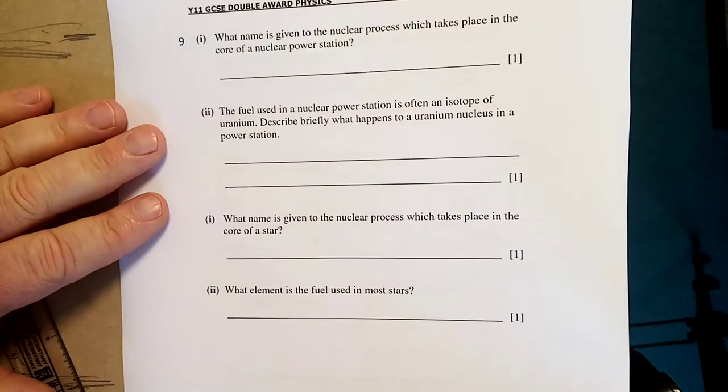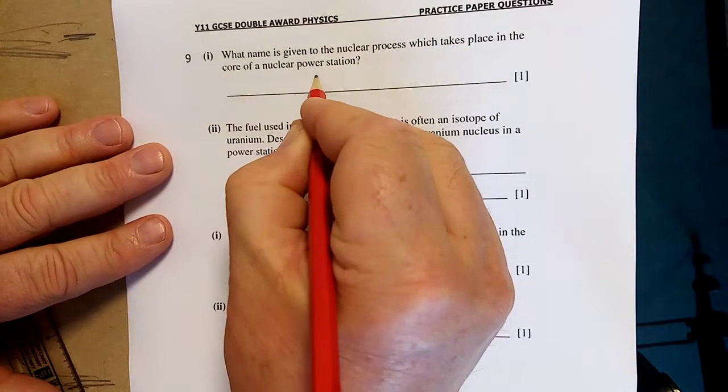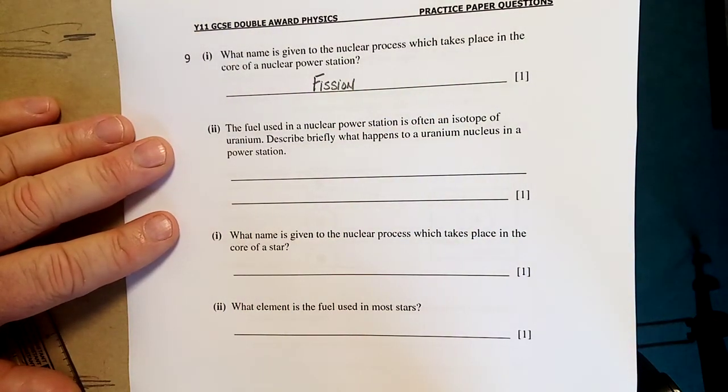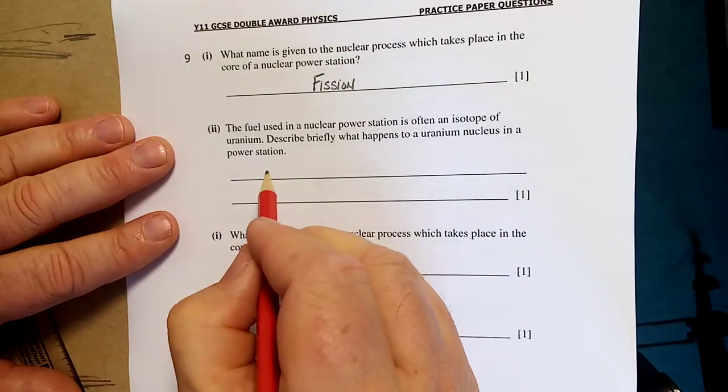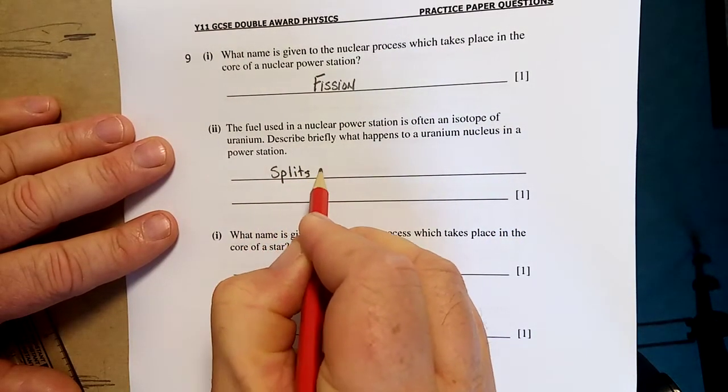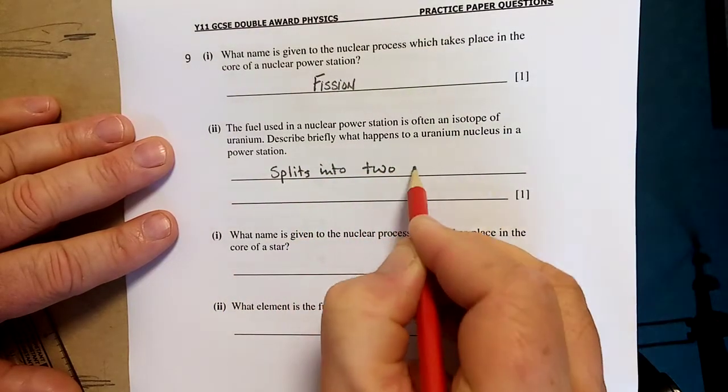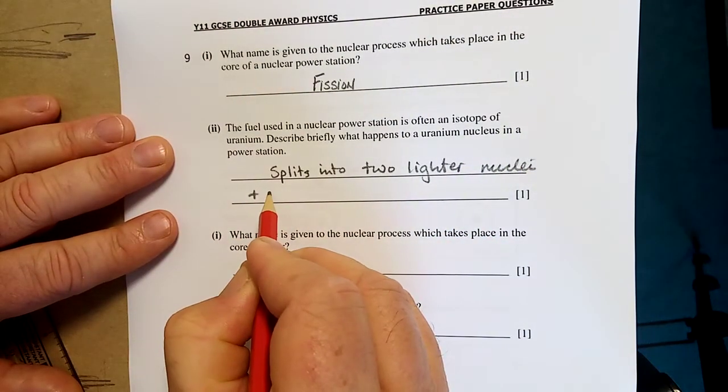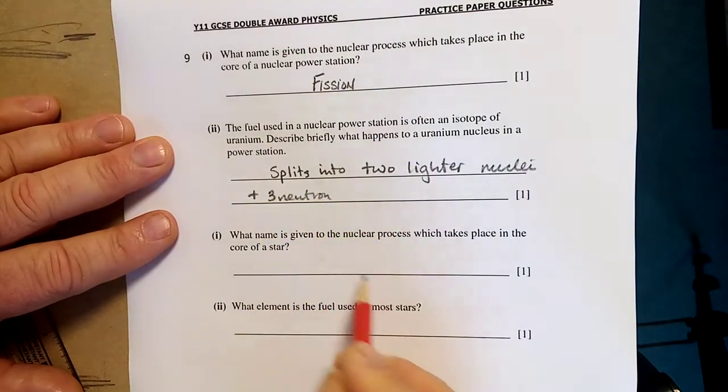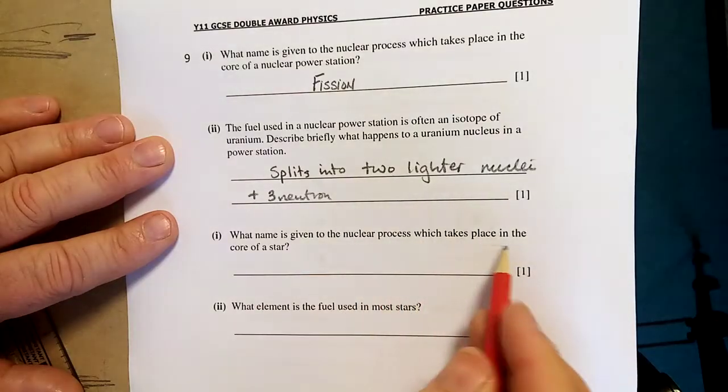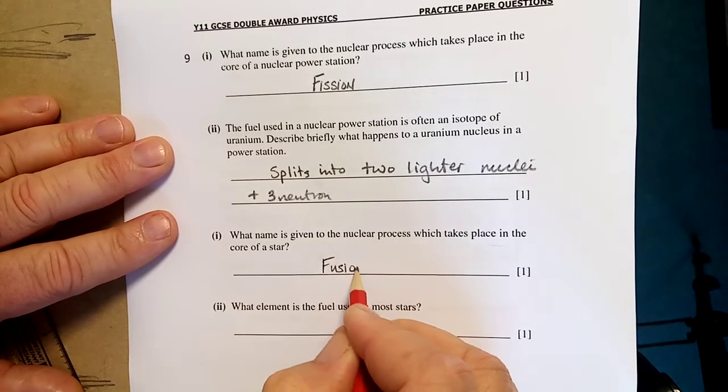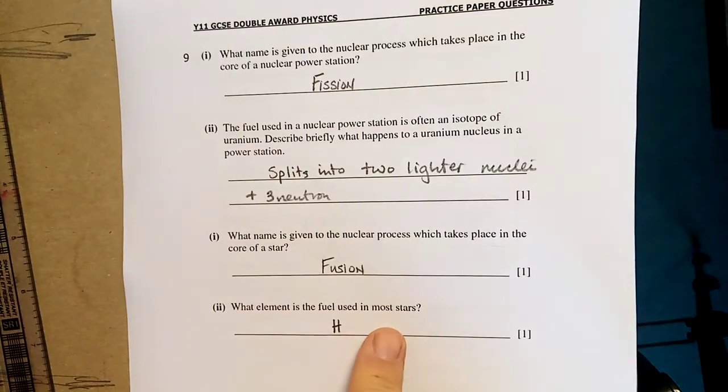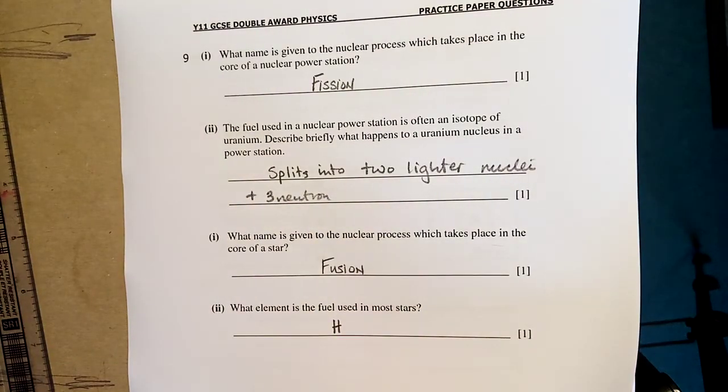What name is given to the nuclear process which takes place in the core of a nuclear reactor? Fission. Again, give a full sentence. The fuel used in the nuclear power station is often an isotope of uranium. Describe briefly what happens to a uranium nucleus in a power station. It splits into two smaller nuclei plus neutrons. What name is given to the nuclear process that takes place in stars? Fusion. What element is the fuel used in stars? Hydrogen. But remember deuterium and tritium, and you have to know the equation of that.